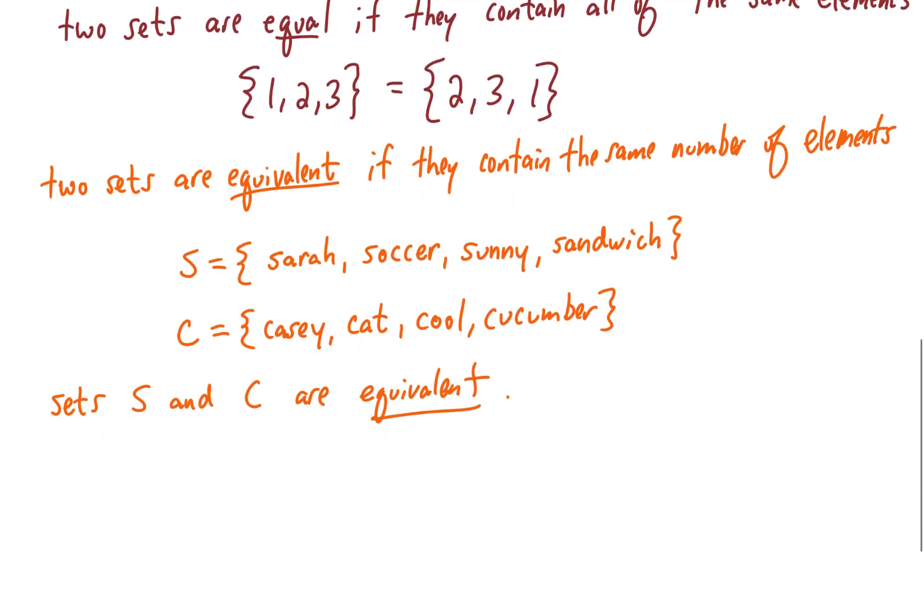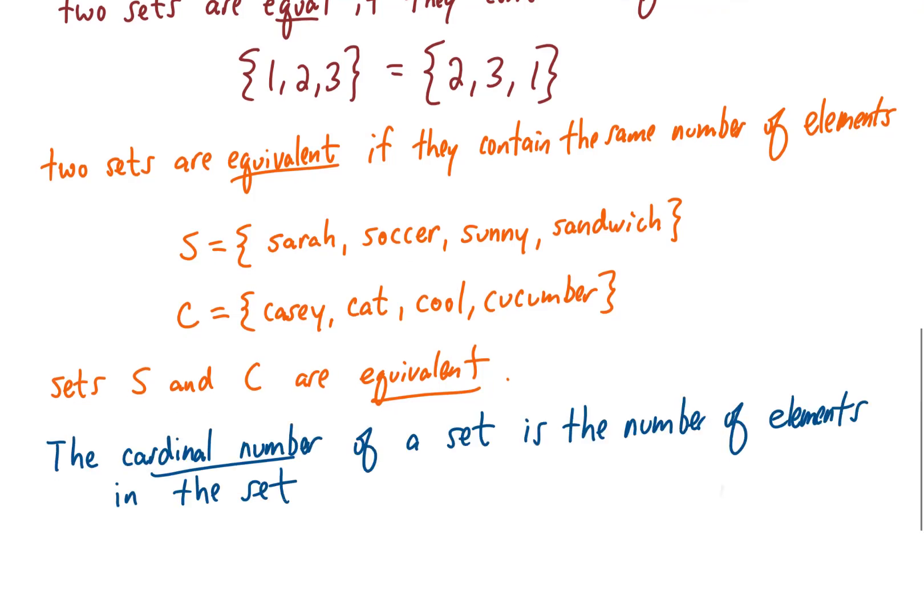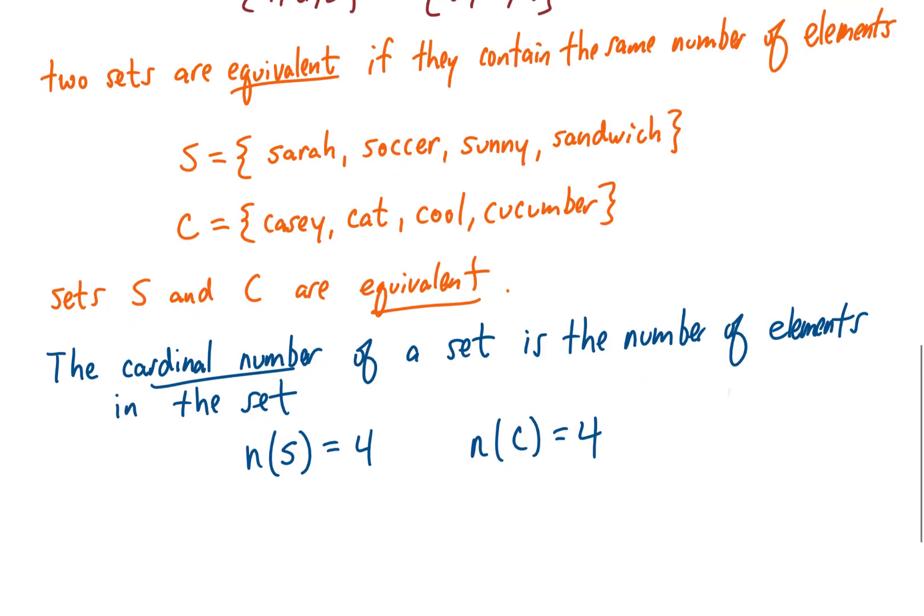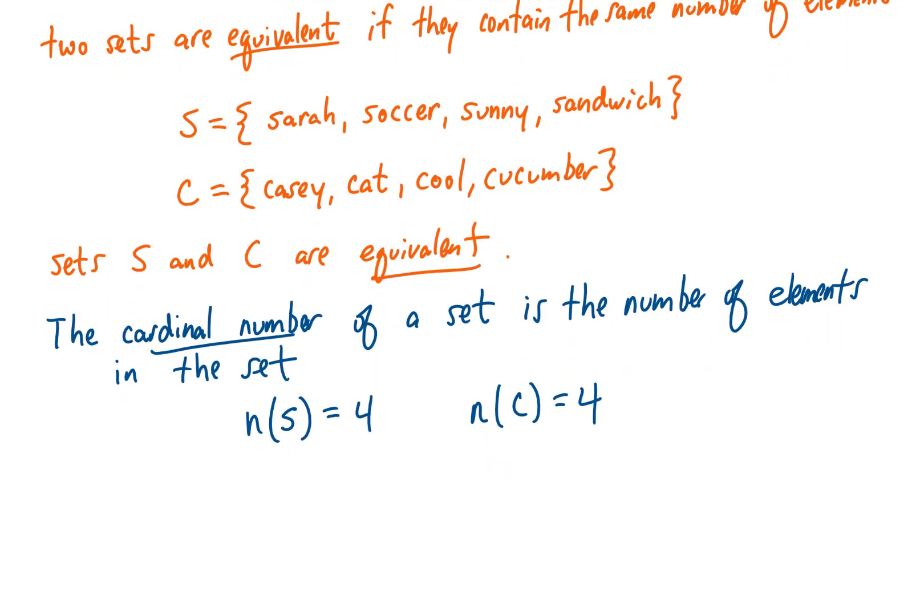Along similar lines, we can say that the cardinal number of a set is the number of elements in that set. The cardinal number of a set is denoted with a little n. So using these two sets above, we can say that the cardinal number of set S equals 4, and the cardinal number of set C is also 4.